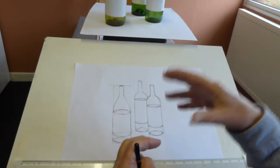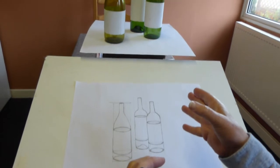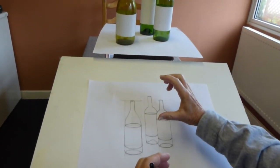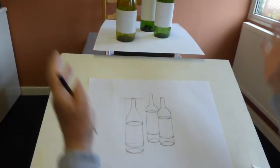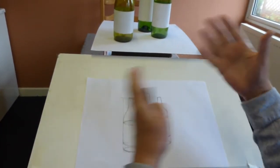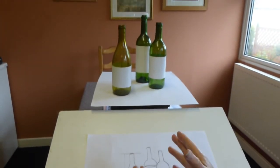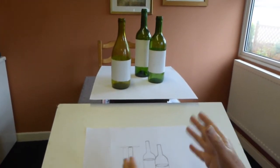Proportioning is to do with comparing one thing to another. I could do the drawing of these bottles very small, or I could do them on the side of a building. As long as they all relate exactly the same to each other as they do at the moment, they will be in proportion. And I'm going to show you how to do this.